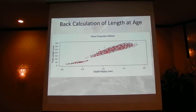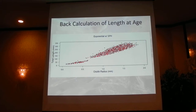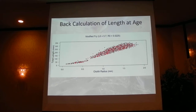However, we appear to be overestimating total length at age for otolith radii in the range of about 0.6 to at least 1 millimeter. Introducing curvature helps — first with an exponential curve, which shifts the belly of the distribution down somewhat, but we're still overestimating total length for younger fish. Ultimately we settled on the modified Rife back-calculation model, which introduces two parameters: L0, length at hatch, and R0, otolith radius at hatch. The values we used — 5.7 for L0 and 0.225 for R0 — were pulled from the literature for Atlantic herring.